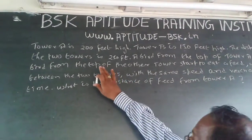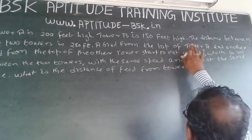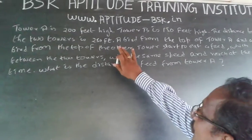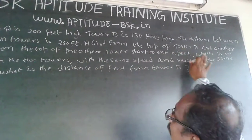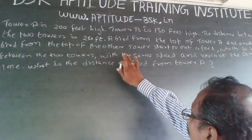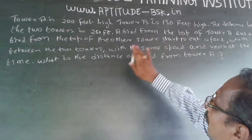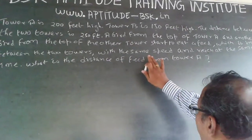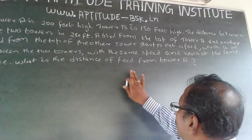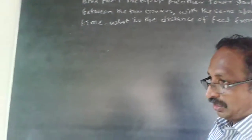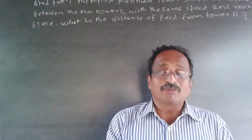Tower A is 200 feet high, Tower B is 150 feet high, and the distance between the two towers is 250 feet. A bird from the top of Tower A and another bird from the top of the other tower start to eat a feed which is in between the two towers, with the same speed, and reach at the same time. What is the distance of the feed from Tower A?